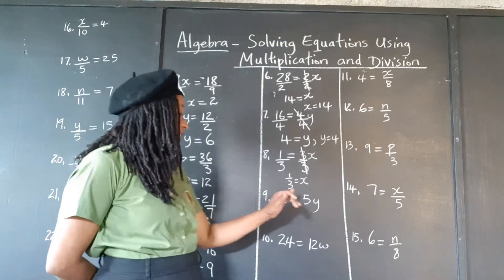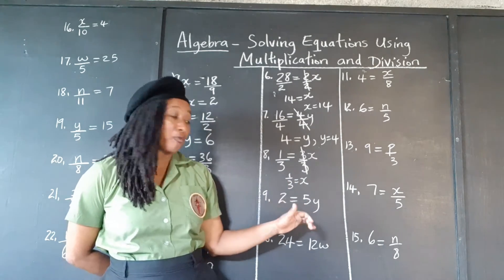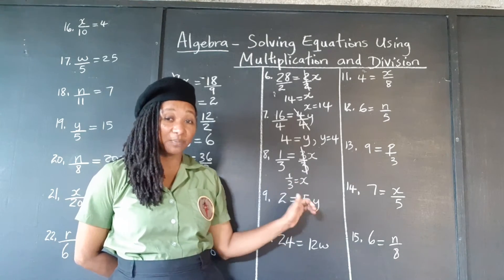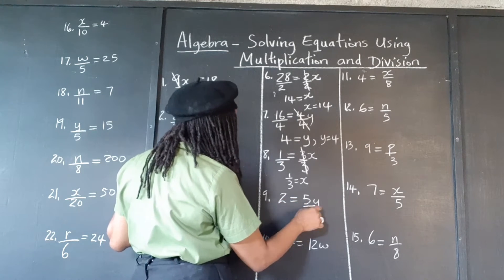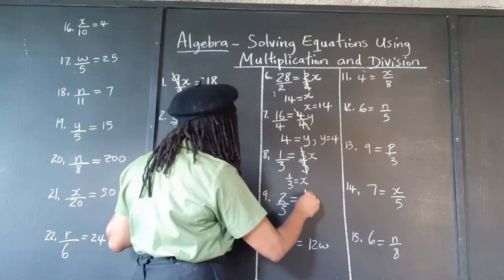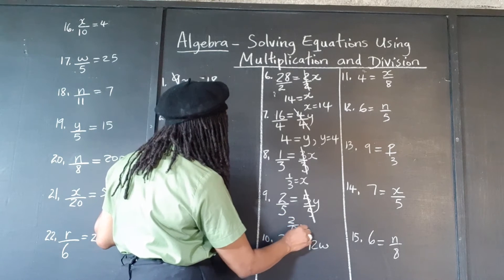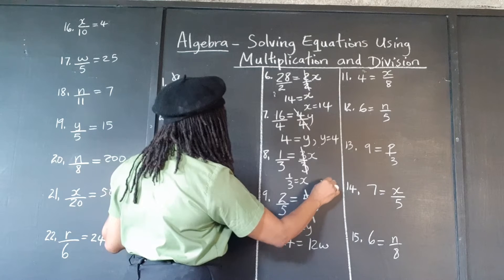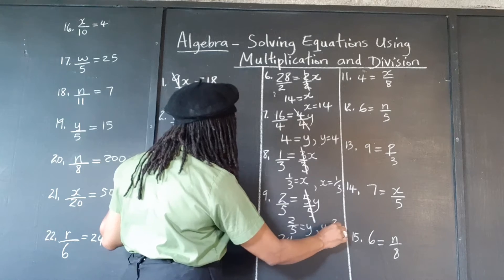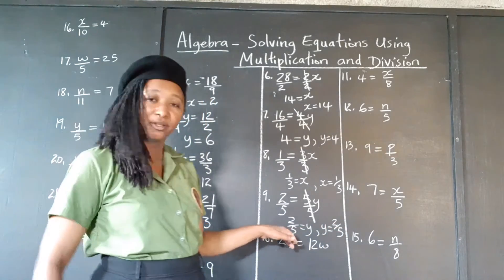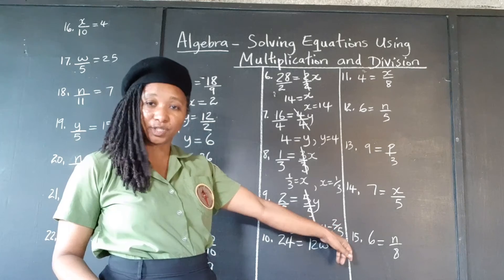Now, 2 is equal to 5 times which number? Again, 2 is smaller than 5, so if we're multiplying 5 by a number to get 2, it must be a fraction. We're going to divide by the coefficient of y, which is 5, and do the same thing on this side. The 5s cancel out, so we get a fraction as our answer: 2 fifths. Y is equal to 2 fifths. Just to put it in the preferred way, with the variable on the left: y equals 2 fifths. You're not wrong if you leave it the other way — this is just the preferred way.